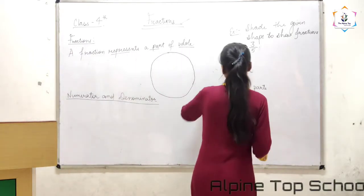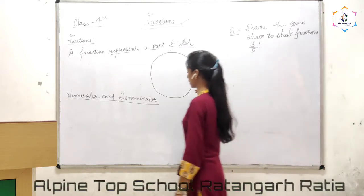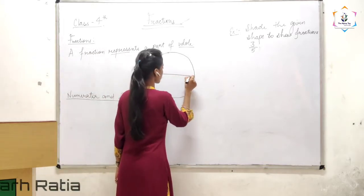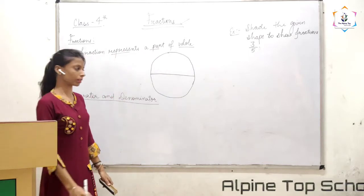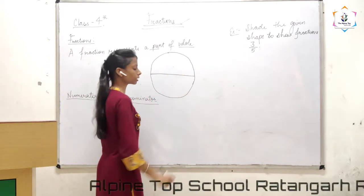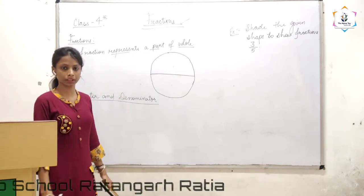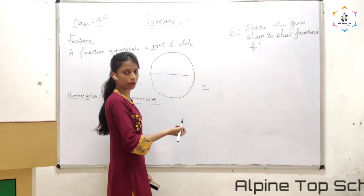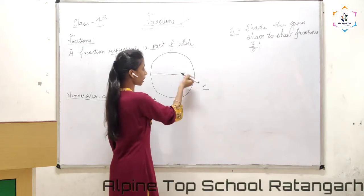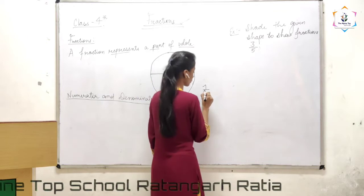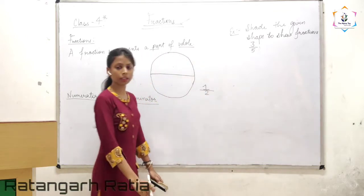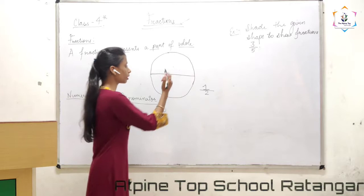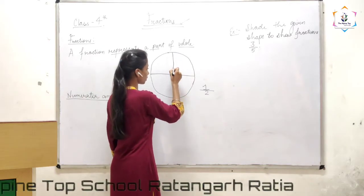Now let's take another example. I have drawn here a circle. Now I make two equal parts of this circle — you can see here one part and the second part. How can I represent it in a mathematical form? If I have to represent this one part, this part is one part. How many total parts are here? Two.